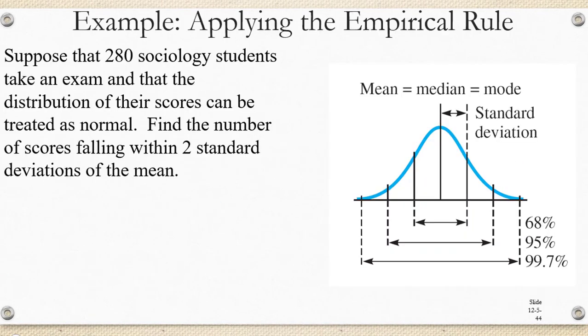Now let's apply the empirical rule to a word problem. Suppose that 280 sociology students take an exam and that the distribution of their scores can be treated as normal. Find the number of scores falling within two standard deviations of the mean using the empirical rule.